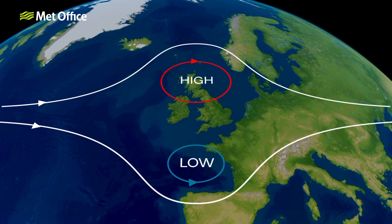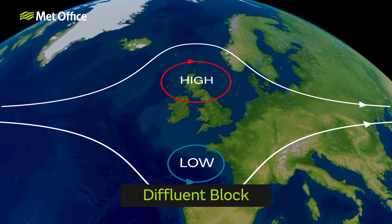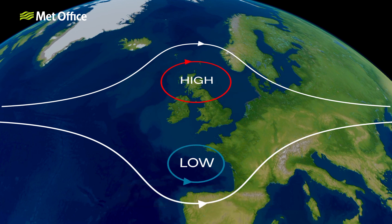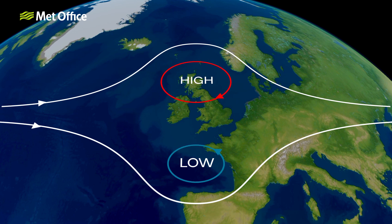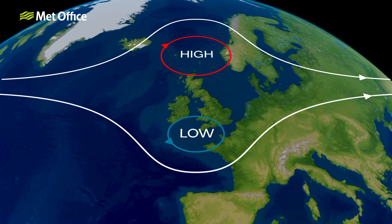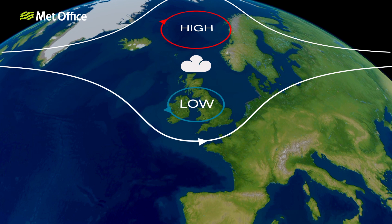A diffluent block is when an area of high pressure sits to the north of an area of low pressure and splits the flow of the jet stream. As with an omega block, the exact positioning of the high and the low will have a major impact on the type of weather the UK receives. With the high across the UK, fine and settled weather is most likely, but with low pressure in charge, bands of rain would be the main feature.